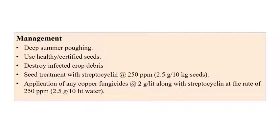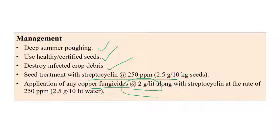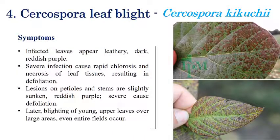Coming to the management aspects: deep summer ploughing and use of healthy or certified seeds are recommended. Destroy infected crop debris. Seed treatment with streptocycline at the rate of 250 ppm — that is 2.5 grams per 10 kilograms of seeds. Application of any copper fungicide at 2 grams per litre of water, and streptocycline at 250 ppm (2.5 grams in 10 litres of water), gives better results.